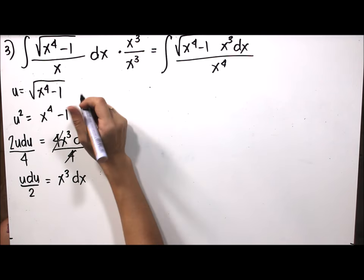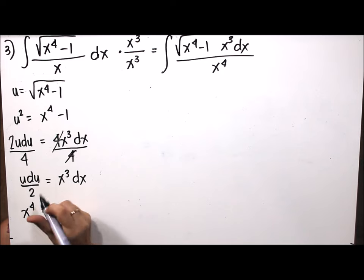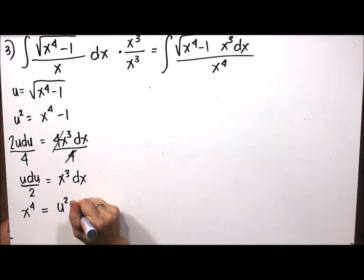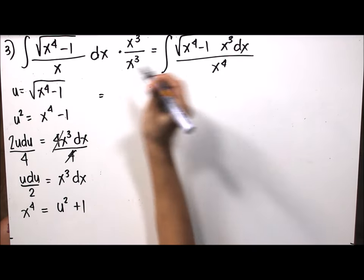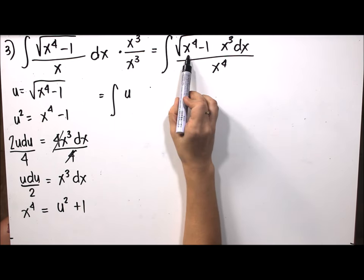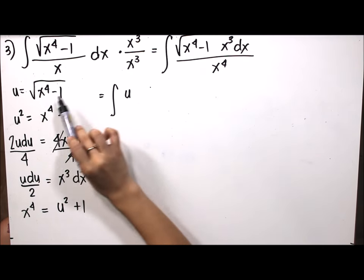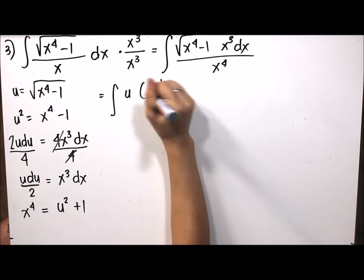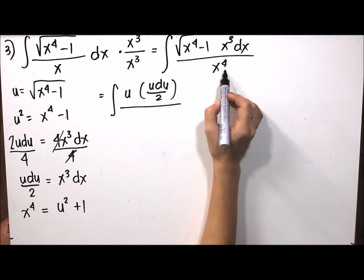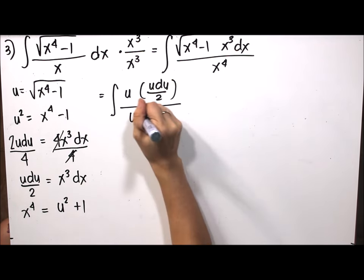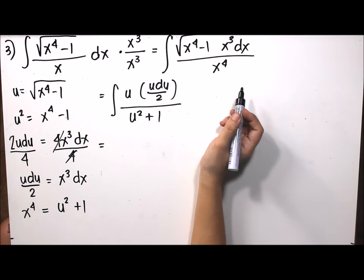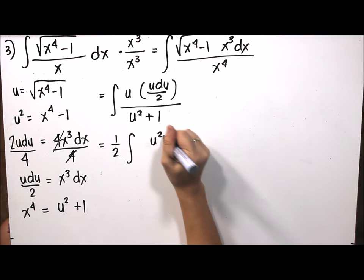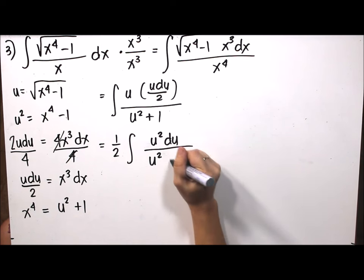Now we substitute: the square root of x to the fourth minus 1 becomes u, x cubed dx becomes u du over 2, and for x to the fourth, we use u squared equals x to the fourth minus 1, so x to the fourth equals u squared plus 1. The integral simplifies to one-half times the integral of u squared du over u squared plus 1.